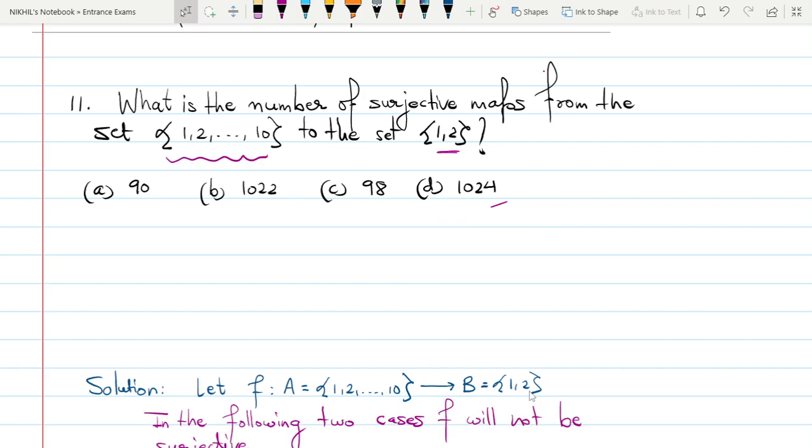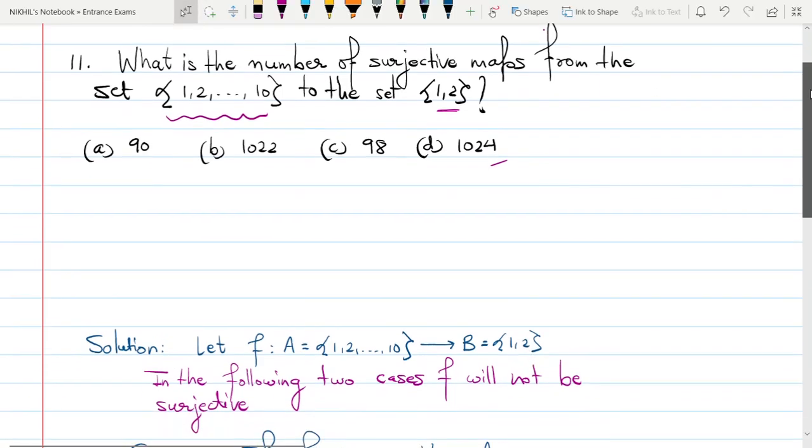Rather than now finding the number of surjective maps to answer this question, there is a very simple way. First, if I can find the number of maps from set A to B, what are the total possibilities, and out of the total possibilities, I can subtract those in which case those are not surjective. I can look for those cases in which my map is not surjective and I can simply discard those possibilities.